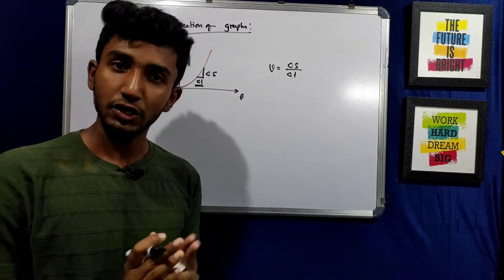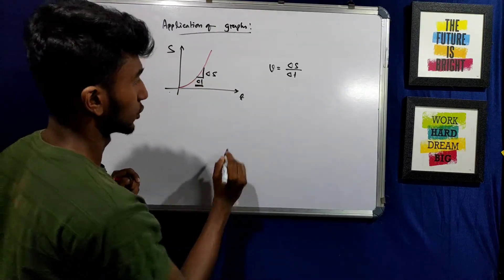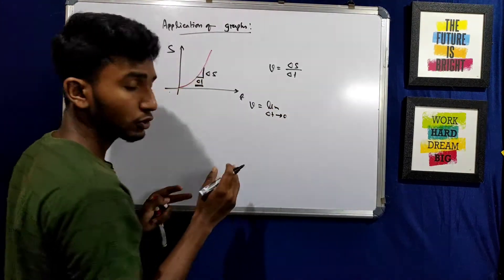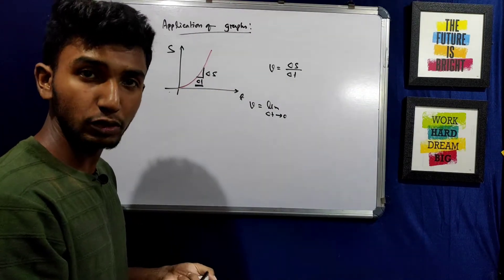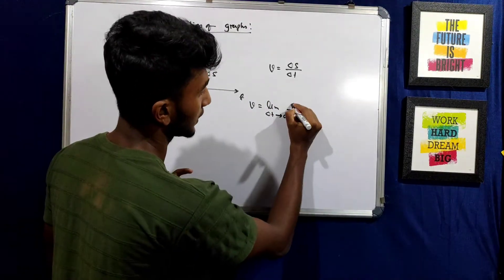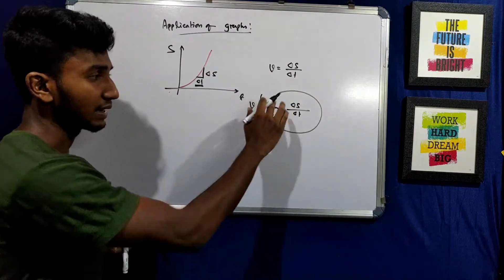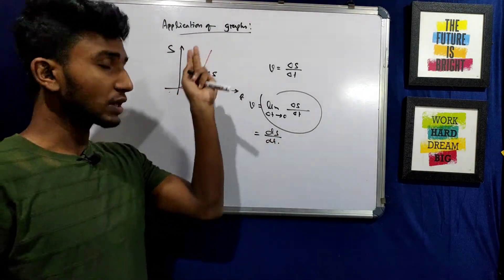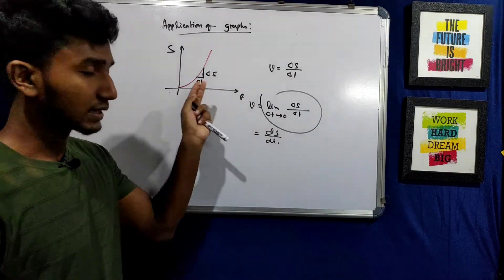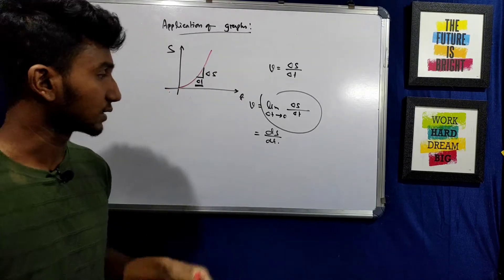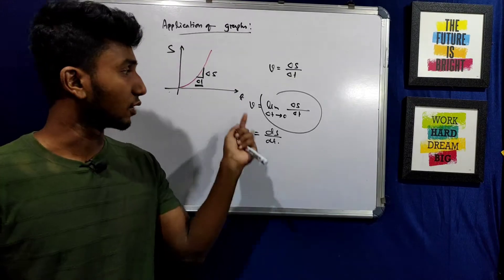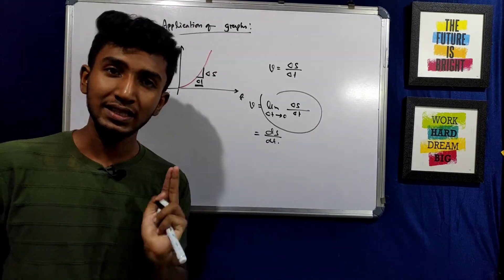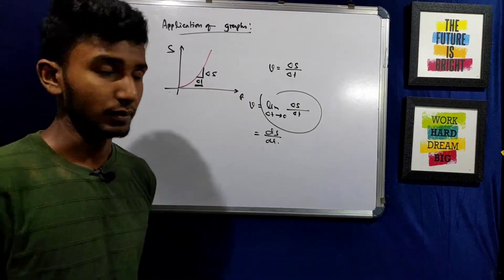Here we apply the limit. We already learned limit. Here what will we use? We will use limit. In this case, when the time interval becomes very small — as delta t tends to zero — the velocity won't change much. Because here acceleration is acting, delta t tends to zero. Velocity means delta s by delta t, and we learned that the limit as delta t tends to zero of delta s by delta t means ds by dt. So when an object moves with uniform acceleration, if we want to determine the velocity at a particular point by taking the time derivative, that gives us the instantaneous velocity.